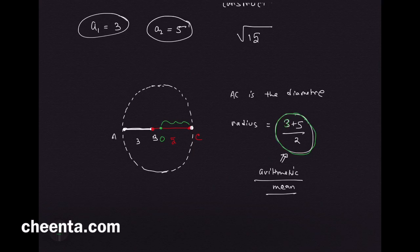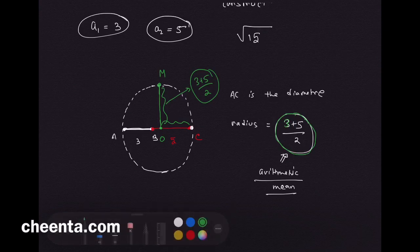If you erect a perpendicular at O, let's call it OM, this is also the radius, so (3 + 5) over 2. That's the value of the radius, simple enough.